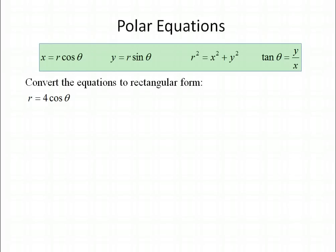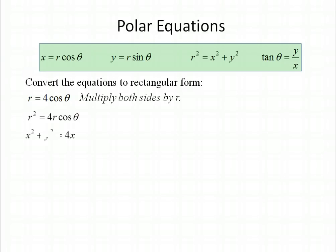Let's try r equals 4 times the cosine of theta. The first thing we do is multiply both sides by r — be careful, we're not squaring both sides, just multiplying by r. So we have r squared equals 4 times r cosine theta. We know r squared equals x squared plus y squared, and r cosine theta equals x, so we get x squared plus y squared equals 4x. It's still not easy to graph in that form.